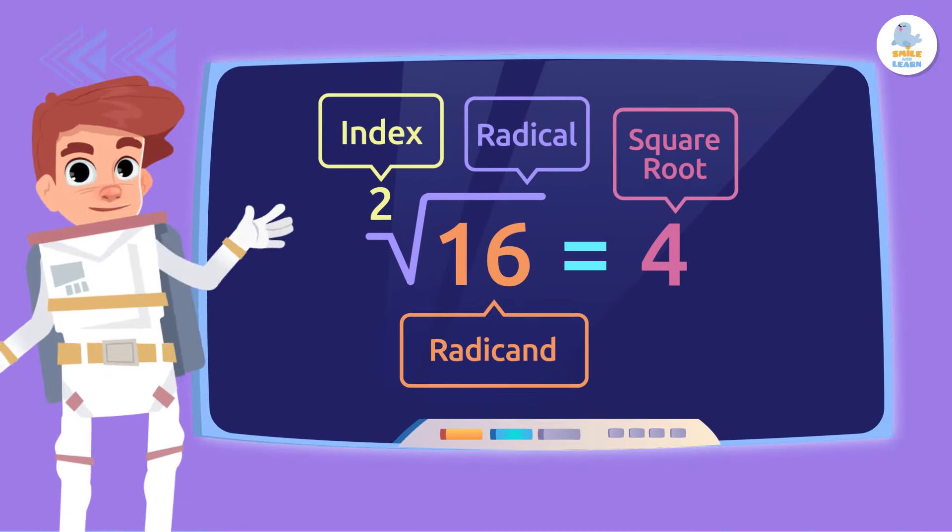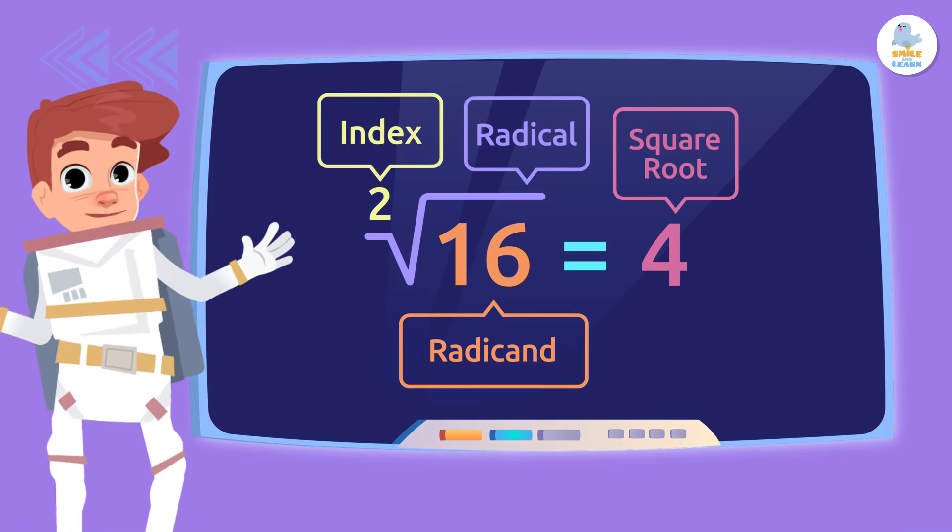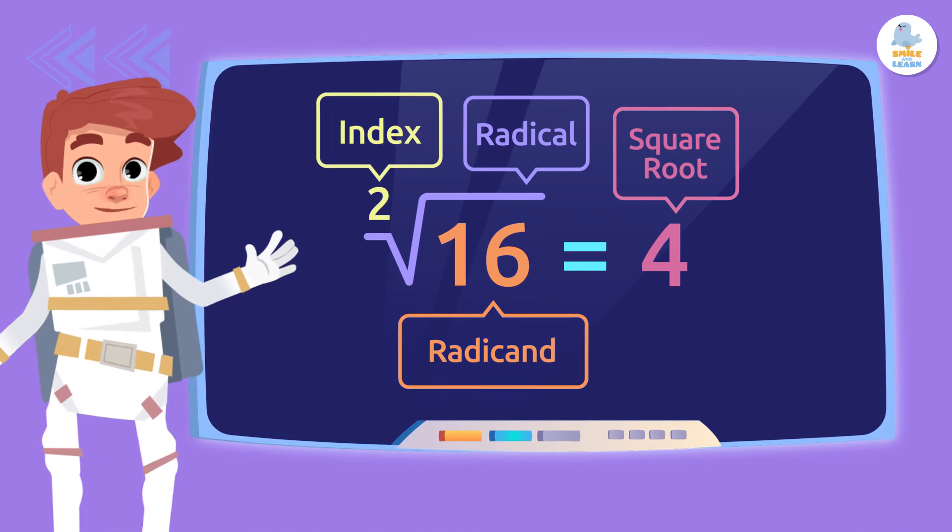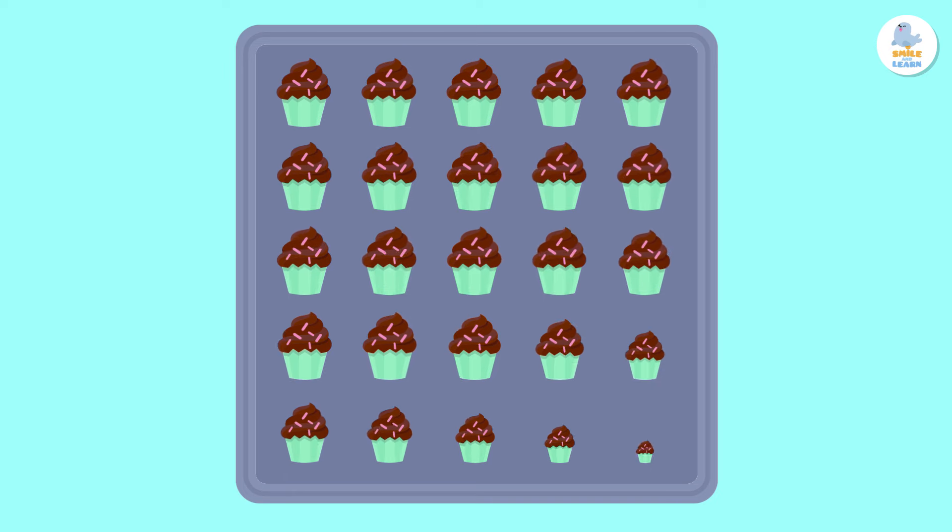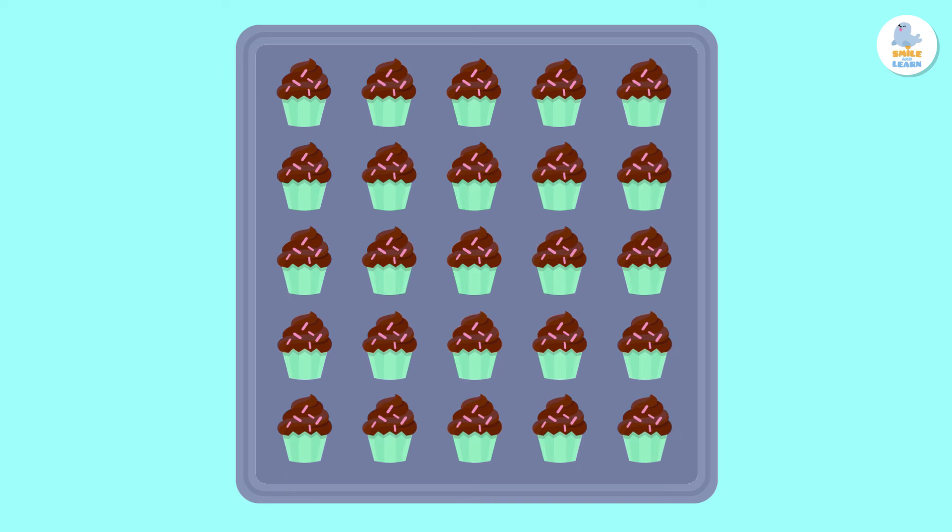Now that we know what a square root expression is and the parts that make it up, we'll learn what we can do with it. Let's look at an example. We have a square tray with 25 cakes, and we want to know how many cakes are on each side.